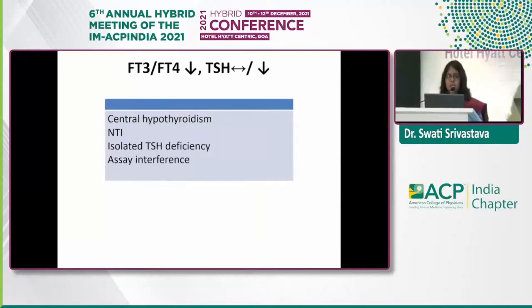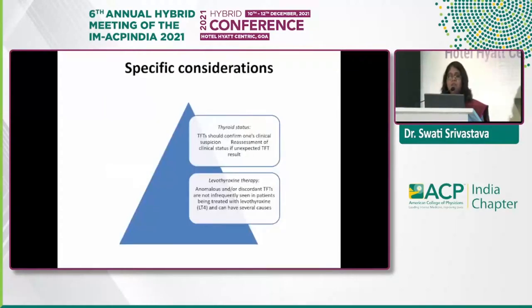Low or normal TSH with low thyroid hormones occurs in central hypothyroidism, non-thyroidal illness, TSH deficiency, and assay interference. This is the usual presentation of secondary or tertiary hypothyroidism.